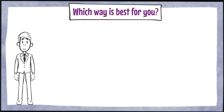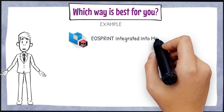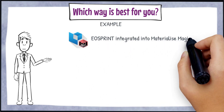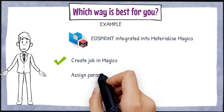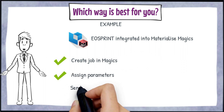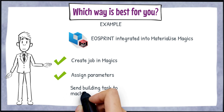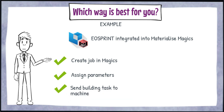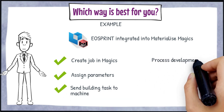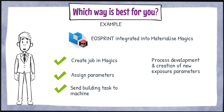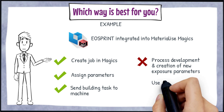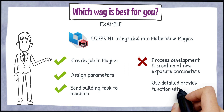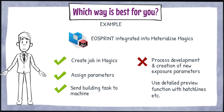For example, if you use a version of EOSPrint integrated into Magics, you could create a job in Magics, assign exposure parameters, and send the building task to the machine. But activities such as process development and the creation of new exposure parameters are only possible directly in EOSPrint. EOSPrint also offers some detailed preview functions which are not accessible from other software.